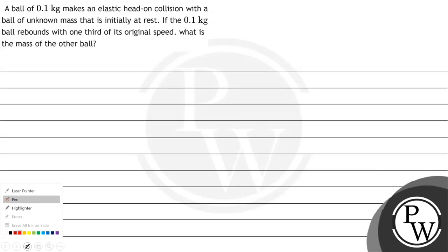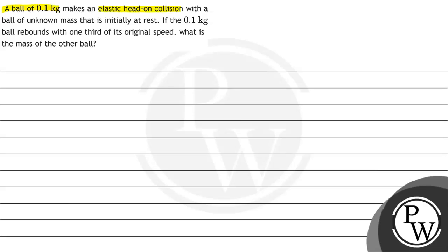Hello, let's read the question. The question says: a ball of 0.1 kg makes an elastic head-on collision with a ball of unknown mass that is initially at rest. If the 0.1 kg ball rebounds with one third of its original speed, what is the mass of the other ball?